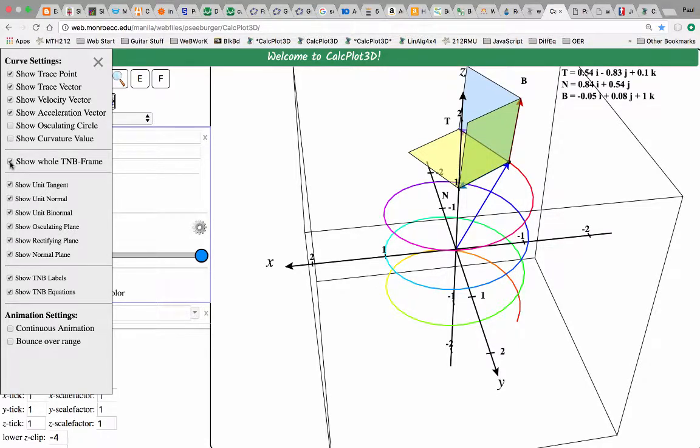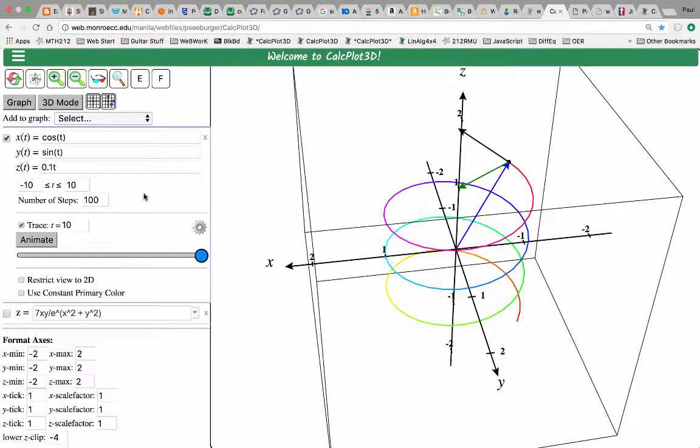Yep. So that shows the whole TNB frame, as you can see to the right. And you can then deselect anything below that if you'd like. Let's go back here and look at something different.